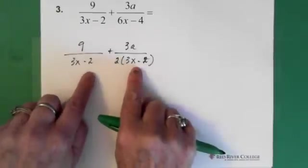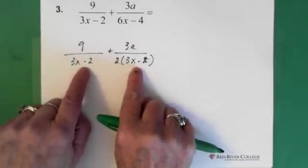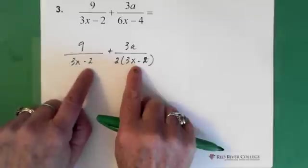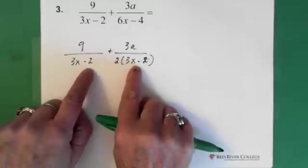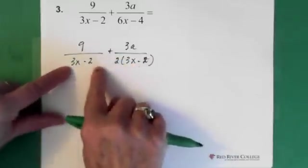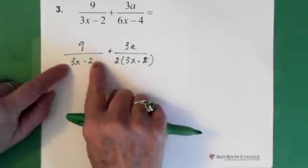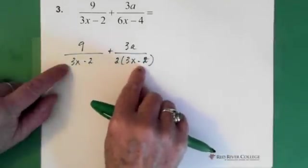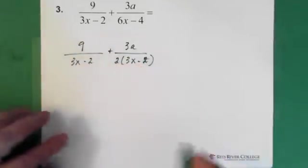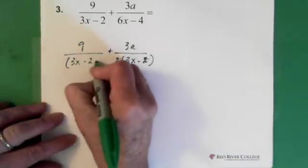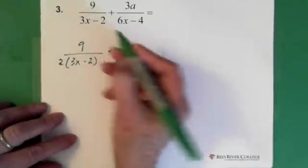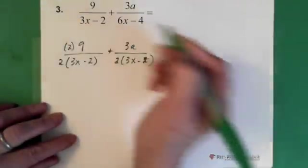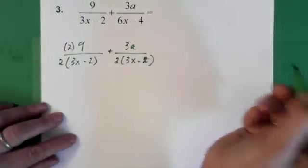So now, 3x minus 2. 3x minus 2. So we have part of our denominator in both of these. Alright. So then we can see that all we need to do here is multiply the 3x minus 2 on this side by 2. And that will give both terms here the same denominator. So we multiply here by 2. But if we multiply this denominator by 2, we must multiply this numerator by 2.